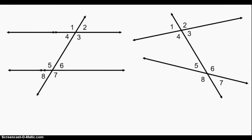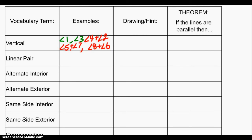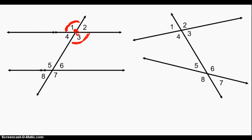Let's give an example of some vertical angles. Right here, angle one and angle three are vertical angles. Vertical angles are across the intersection from each other, just like that. So let me write down an example: angle one and angle three are vertical angles. Pause the video here and try to write down some more examples of vertical angles. Here are some more: four and two, five and seven, and eight and six are all vertical angles. Here's eight, here is six — they're across the intersection from each other, they're vertical angles.